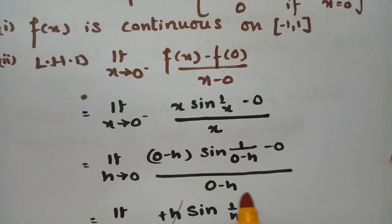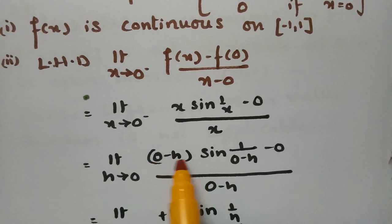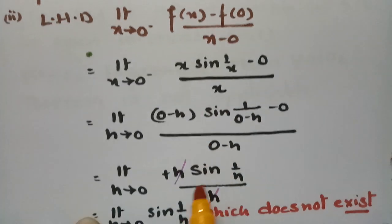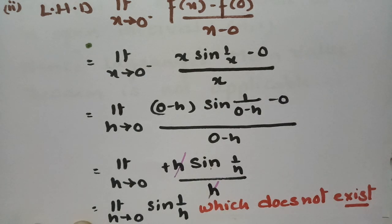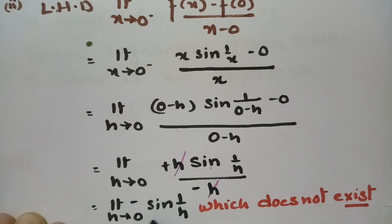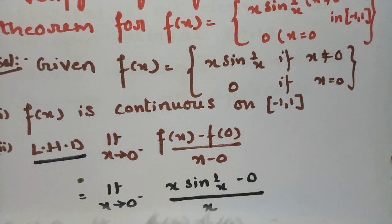Using the left-hand derivative formula with limit h → 0: substituting x = 0 - h gives (-h)·sin(1/(-h)) / (-h). Since sin(-θ) = -sin(θ), this becomes h·sin(1/h) / h = sin(1/h). As limit h → 0, sin(1/h) does not exist — keeping 0 gives sin(∞), which does not exist. Therefore the left-hand derivative does not exist.